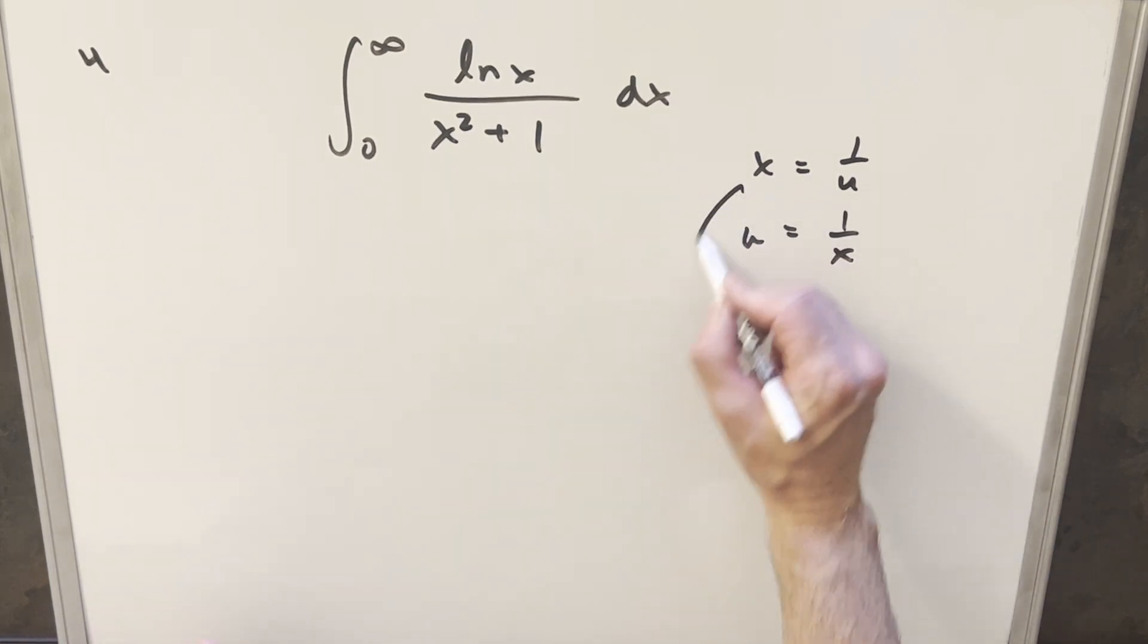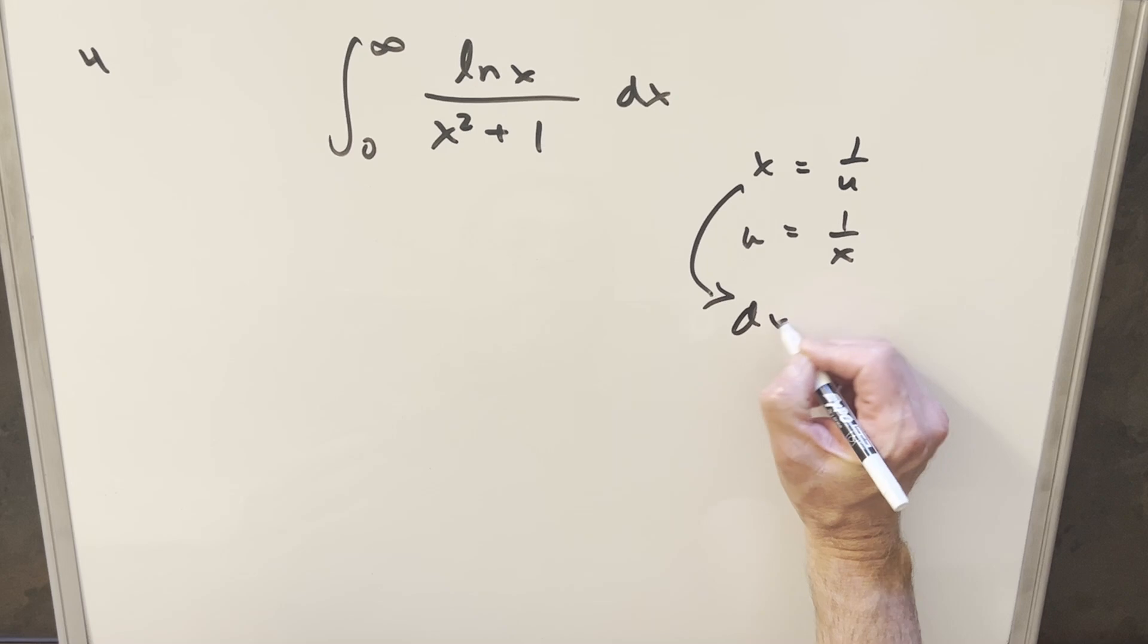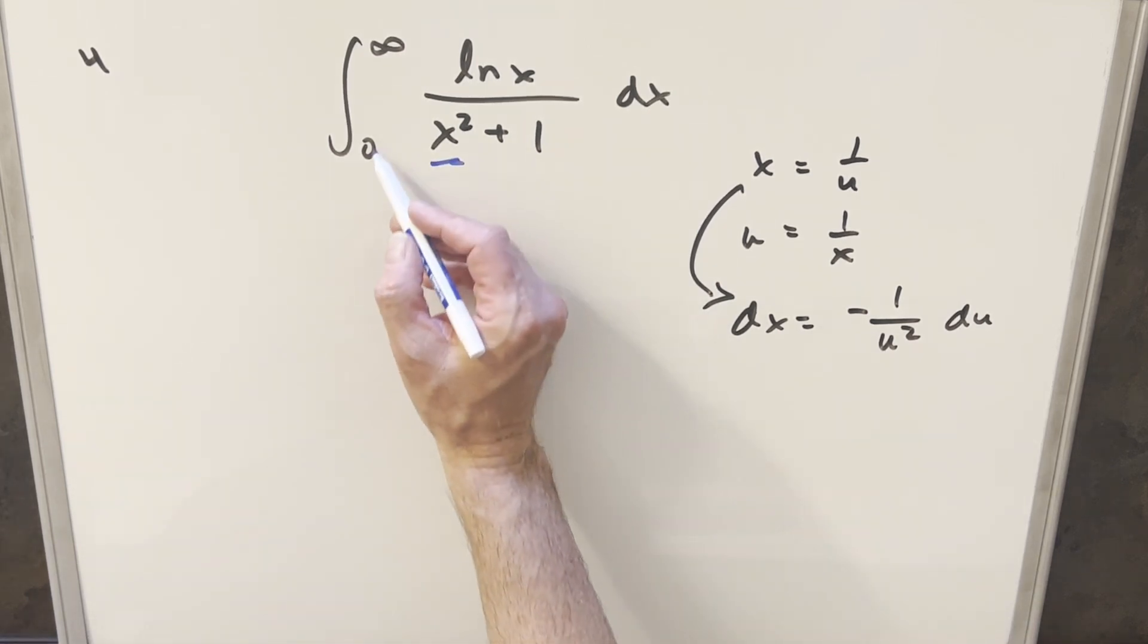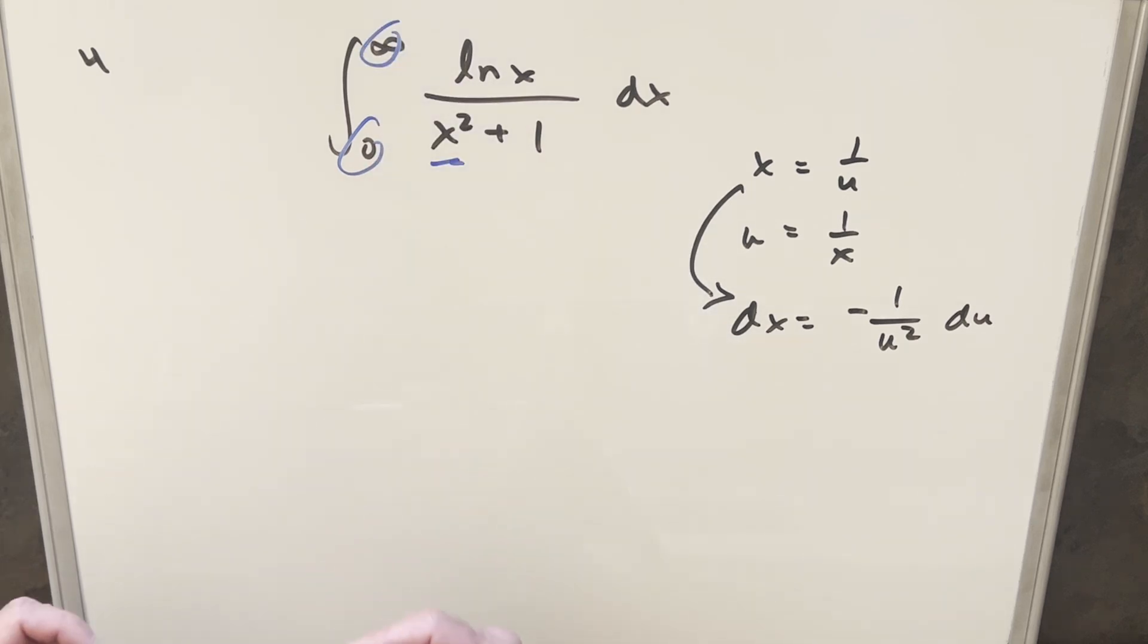So then getting our dx value, just taking a derivative of this one, we're going to have dx is going to be equal to just minus one over u squared du. And this substitution seems to work well a lot of times when you have an x squared in the denominator. Also with these bounds, it seems like it's going to work. So this is a pretty good way to go.